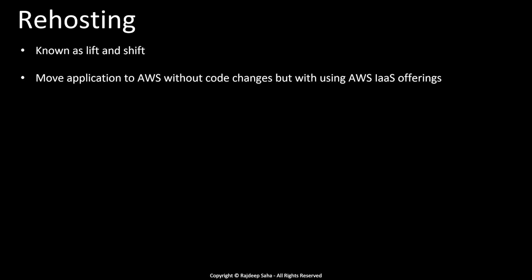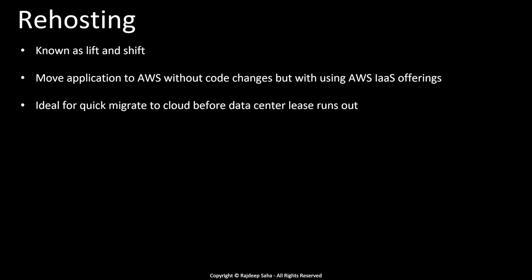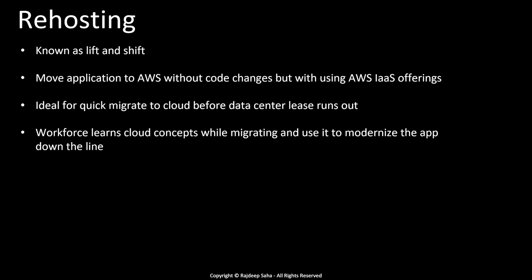The next migration strategy is rehosting, probably the most common strategy, especially when a company is starting their journey into AWS. This is known as lift and shift. In this migration strategy, you move an application to AWS without code changes, but you use AWS infrastructure-as-a-service offerings. This is ideal for a quick migration to the cloud before a data center lease runs out. It's an easy strategy, and the workforce learns cloud concepts while migrating, which can be used to modernize the application down the line.